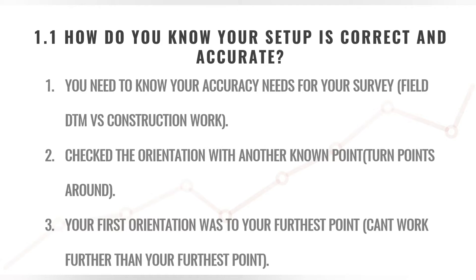But if we just use two points — the setup point and the orientation point — we can easily have swapped the points around. Say we forgot where we were and we told the total station that we're actually at the prism's position and the prism is at the total station's position. That means when you continue with your survey, you'll have a massive amount of error. So it's important to always use a third point to check.